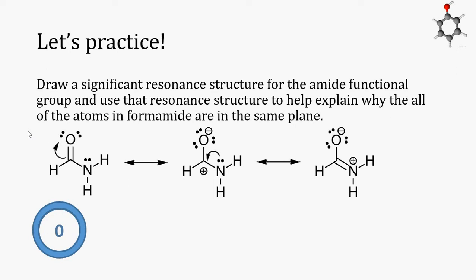These are the three significant resonance structures for formamide. You might be tempted to draw and analyze other resonance structures, but they would have incomplete octets on the oxygen or the nitrogen, and so it would not be significant. Remember, the easiest way to draw all the significant resonance structures is to follow the resonance patterns.